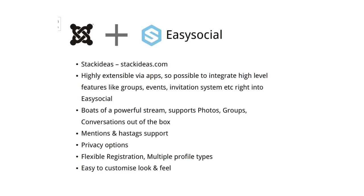Easy Social has flexible registration — you can define more than one step and decide which fields go into which step when you create the signup process. There are also multiple profile types, so if you're building a site for bands, band owners, and musicians, you can create different-looking profiles with different fields for each. Easy Social is very easy to customize in terms of look and feel. It has its own templating system that supports overrides, so for developers and integrators, it's easy to mold it to match the rest of your site.